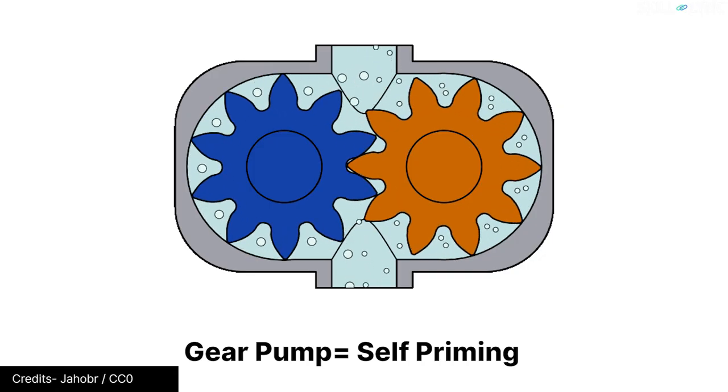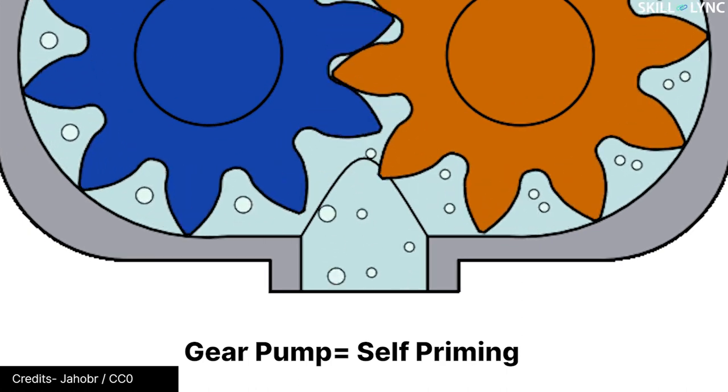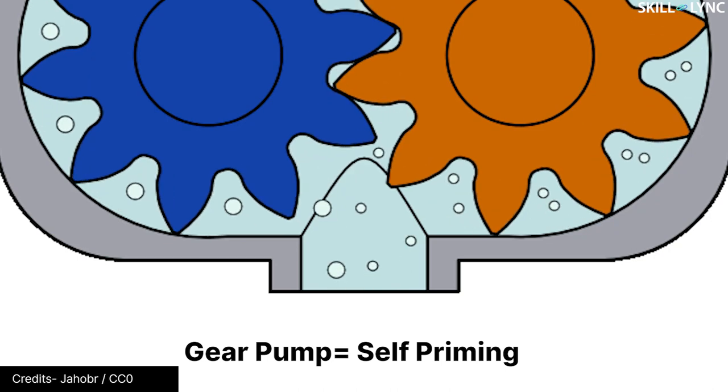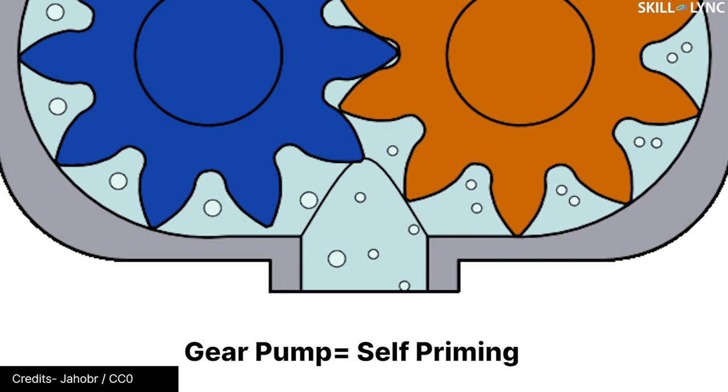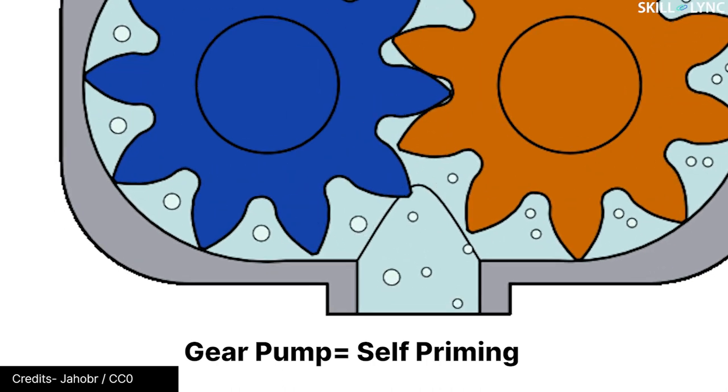As the gears of the pump rotate, they get separated at the suction side of the pump. This area is generally filled with fluid. Even if the suction area is not filled, the gear pumps are self-priming. This means they are capable of generating sufficient suction pressure to pull the fluid towards the gears for pumping. This is the end of the suction operation.